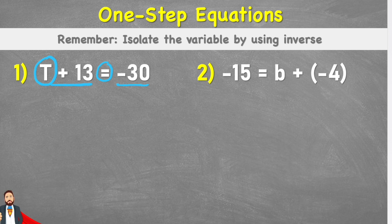So in order to find the value of t I need to get t on its own. But at the minute, like we said, it's connected to this positive 13. So the only way to get rid of this positive 13 is by cancelling it out by inserting a negative 13 to that side of the equation.